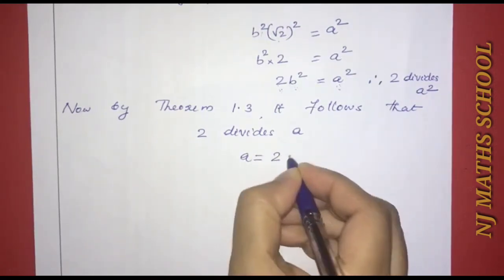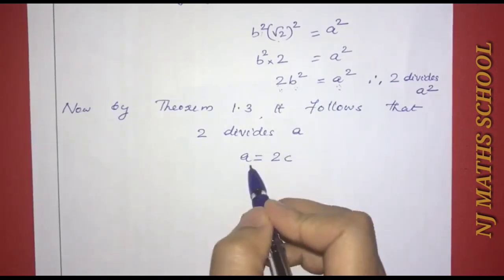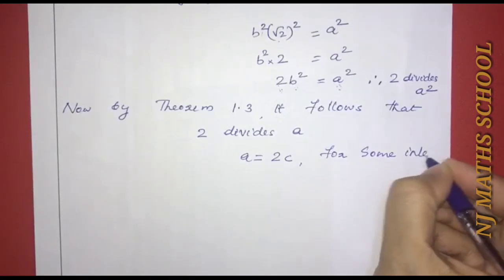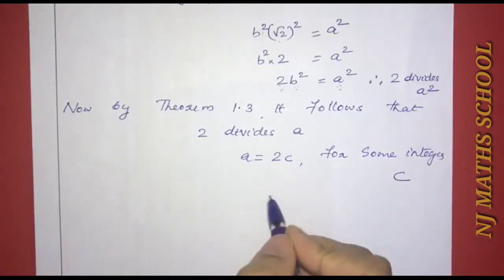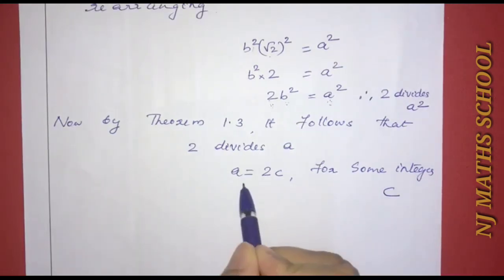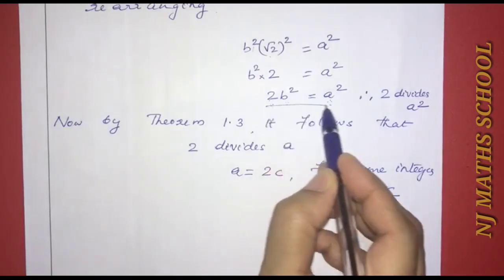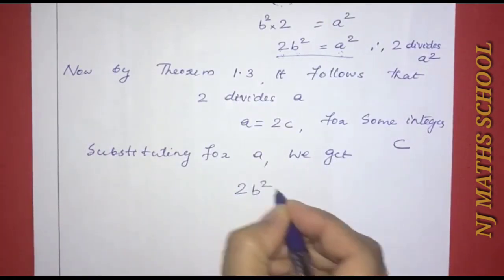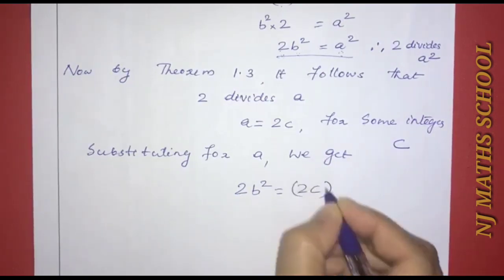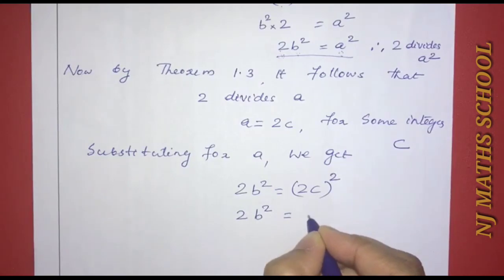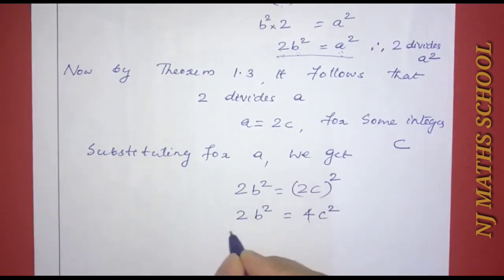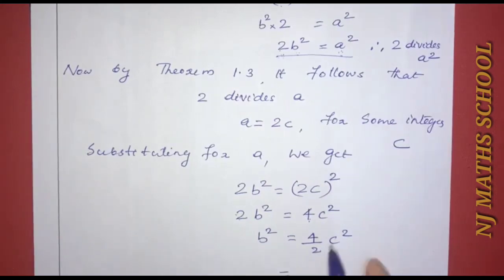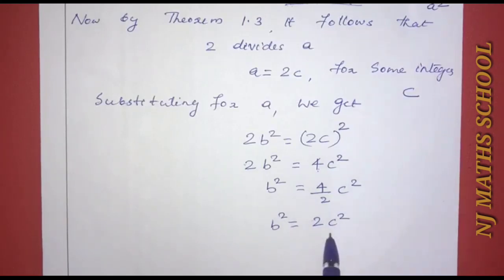Since 2 divides a, we write a = 2c for some integer c. Substituting into 2b² = a², we get 2b² = (2c)² = 4c², which simplifies to b² = 2c². Therefore, 2 divides b².